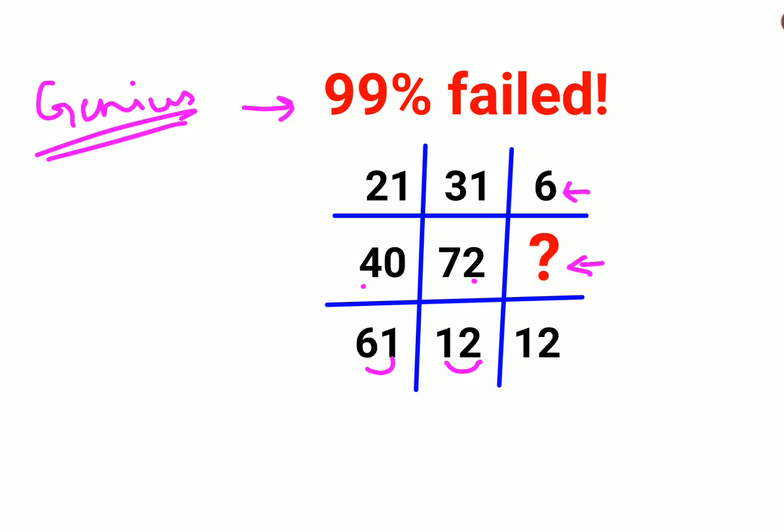So in this case, if you focus on this, the difference is 10, and 10 is nowhere close to 6. So here also, if you see, the differences are not useful in the last series for you to get the value of 12.